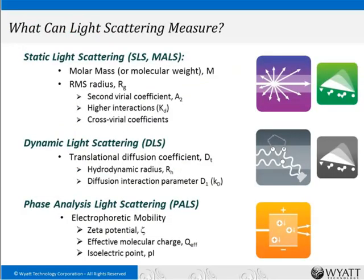So what can light scattering measure? There are various types. The first is static light scattering, also known as multi-angle light scattering, or MALS. MALS has the property that it can determine molecular weight from first principles, which is really important in that you don't have to know ahead of time what you're looking for — you don't have to calibrate columns. It also gives you the radius of gyration, or root-mean-square radius, as long as that dimension is larger than about 10 nanometers.